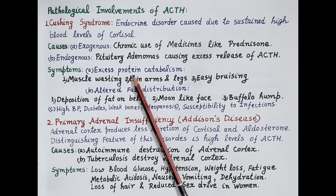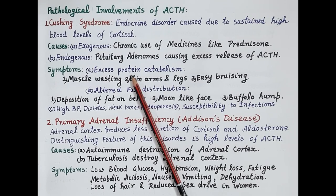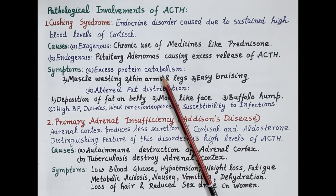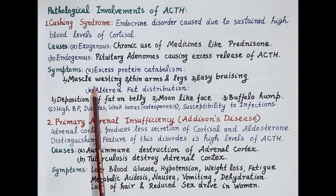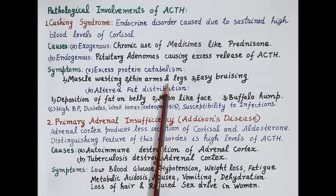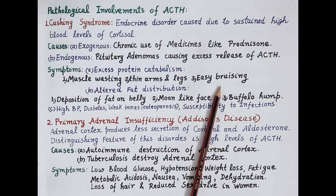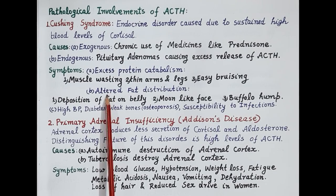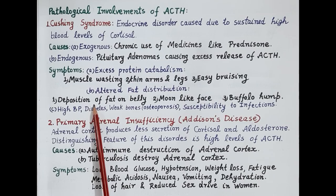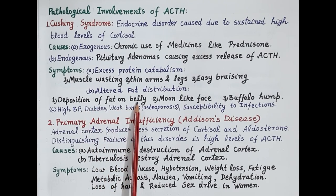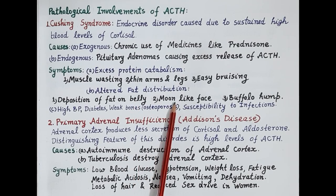Now let's understand symptoms of Cushing syndrome. Increased cortisol causes excessive catabolism of proteins. Since skeletal muscles are made up of proteins, protein breakdown causes muscle wasting — progressive weakness and loss of muscle mass — and thinning of the arms and legs. There is also easy bruising and thinning of the skin. In addition, altered fat distribution causes central obesity, with fat deposits on the belly.